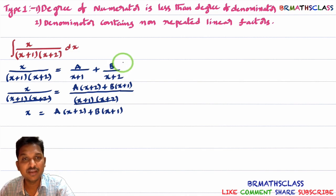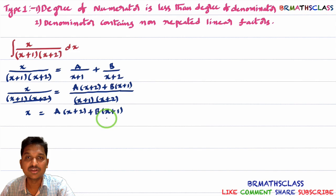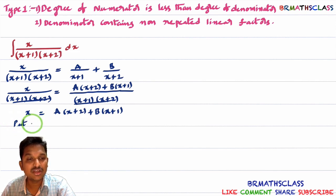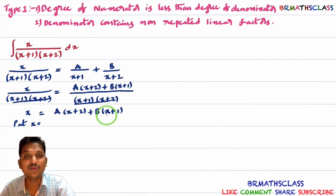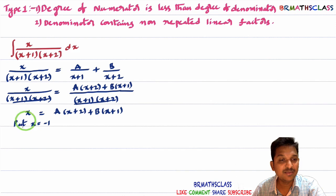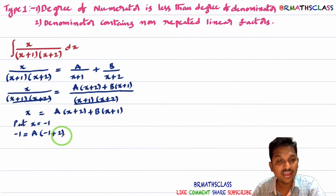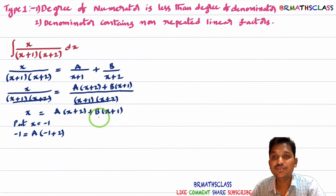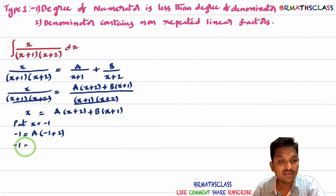To find A, I want to make the B term zero. If I put x = -1, then (-1+1) = 0, making the B term vanish. Substituting x = -1: -1 = A(-1+2) = A(1), so A = -1.